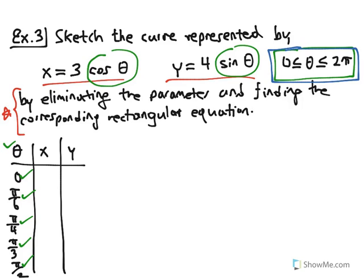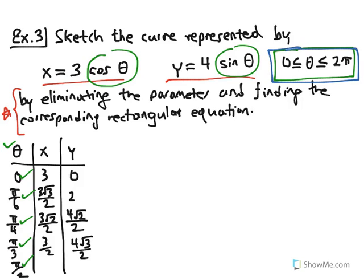At θ = 0: cos0 = 1, so x = 3·1 = 3; sin0 = 0, so y = 4·0 = 0. At θ = π/6: x = 3·(√3/2) ≈ 2.6; y = 4·(1/2) = 2. At θ = π/4: x = 3·(√2/2); y = 4·(√2/2). At θ = π/3: x = 3·(1/2) = 3/2; y = 4·(√3/2). At θ = π/2: cos(π/2) = 0, so x = 0; sin(π/2) = 1, so y = 4.